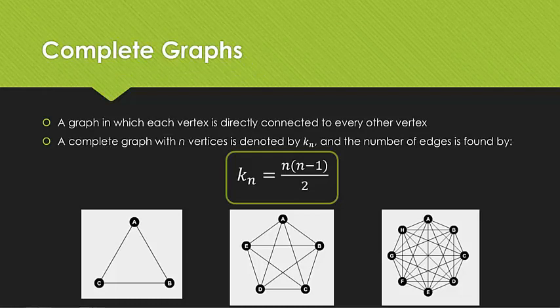Moving on to complete graphs. A complete graph as we said before there is a direct connection between every vertex. Once we get above complete graphs with 4 or 5 vertices it becomes quite difficult to count the number of edges. Therefore we use this formula. We use a k to represent that it is a complete graph and the n is the number of vertices. So by taking a complete graph with 5 vertices we can say well the number of edges will be 5 times 4 divided by 2 by using our rule there.